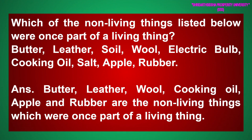Which of the non-living things listed below were once part of a living thing? Butter, leather, soil, wool, electric bulb, cooking oil, salt, apple, rubber. Answer: Butter, leather, wool, cooking oil, apple and rubber are the non-living things which were once part of a living thing.